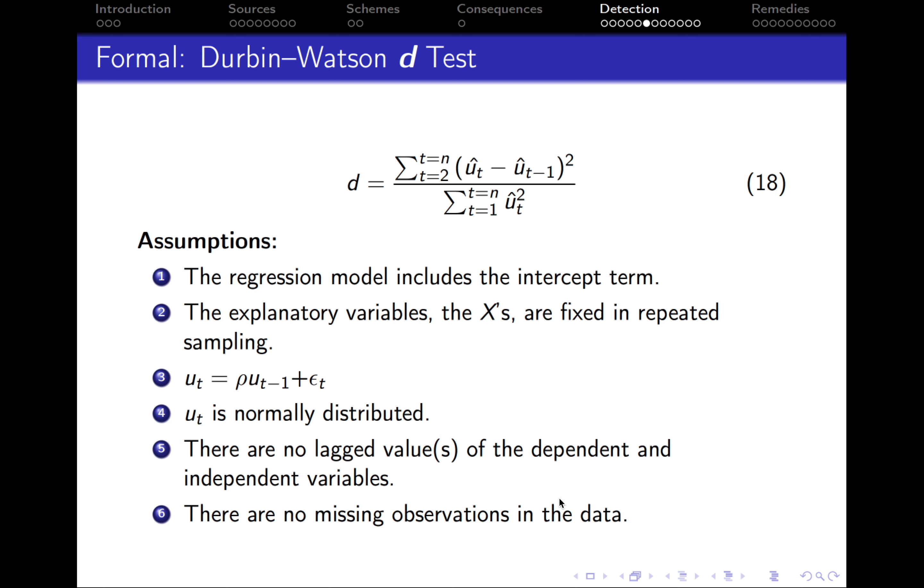The fifth assumption is that there should be no lagged values of the dependent and independent variables. So unfortunately, once again, you cannot use this test when your regression model includes some lagged values. And the last assumption is that there should be no missing observations in the data.